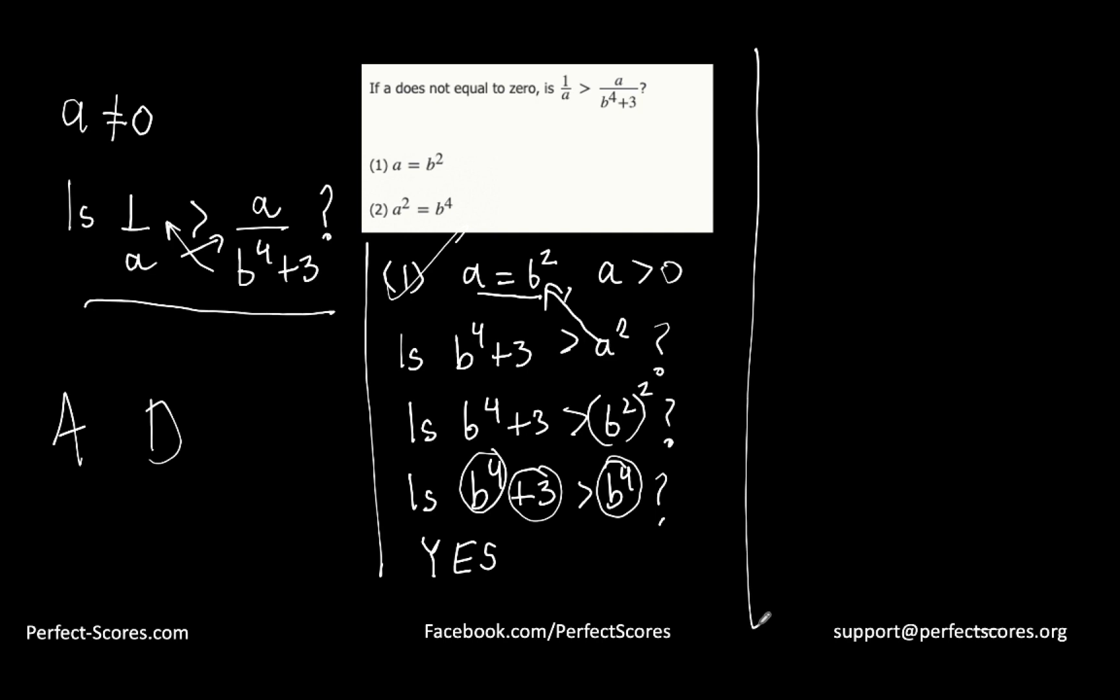Let's move on to the second statement. It says a squared equals b to the power 4.